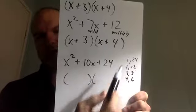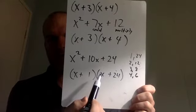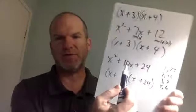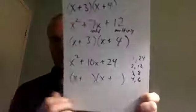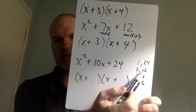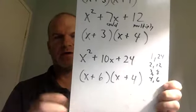Those are our four choices. 1 and 24 multiply to give 24 but add to give 25 — not 10. 2 and 12 add to 14; 3 and 8 add to 11. The only one that adds to 10 is 4 and 6. It doesn't matter if you write the 4 or 6 first — X plus 6 and X plus 4 means the same thing. That's how you do these problems.